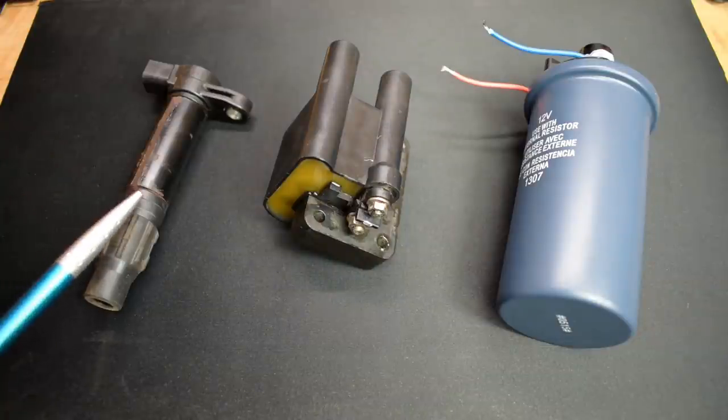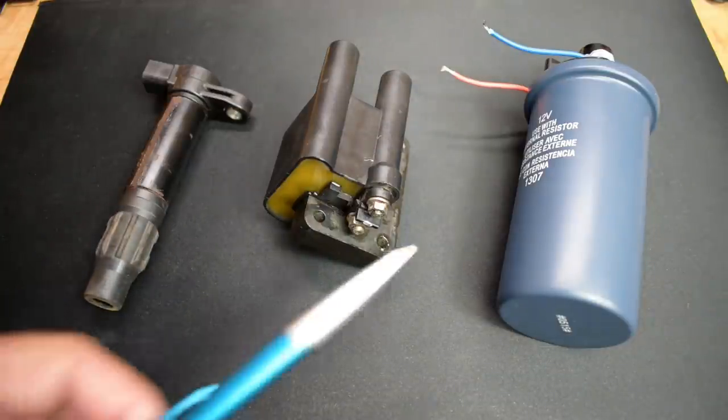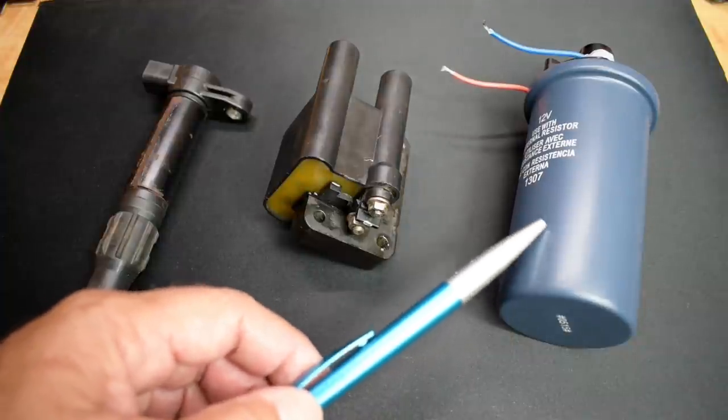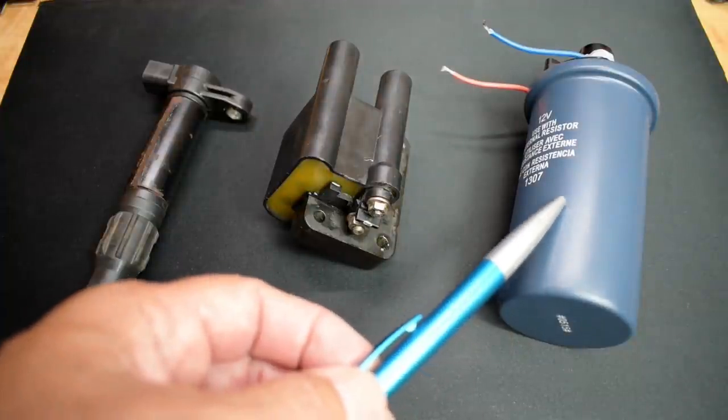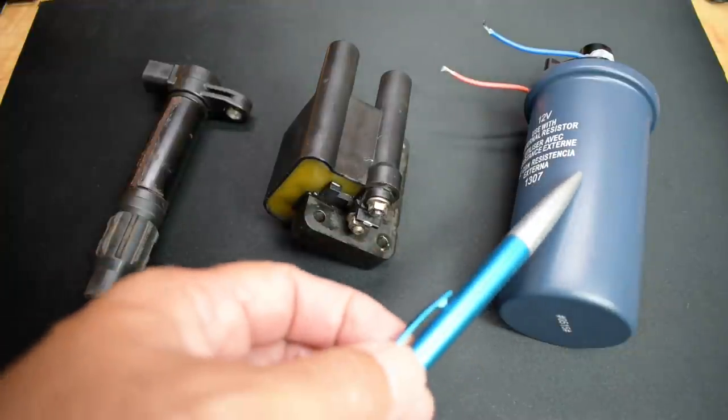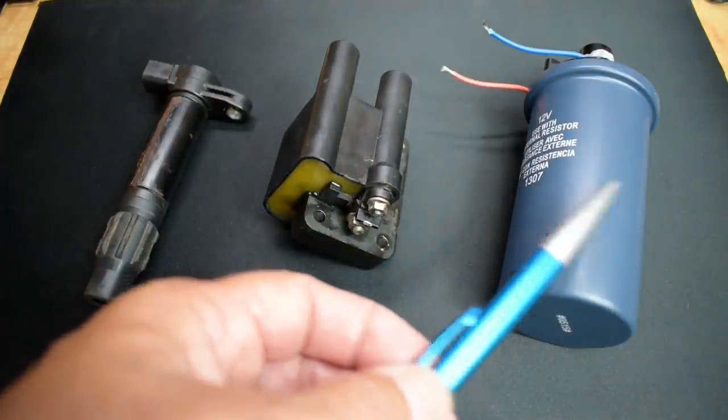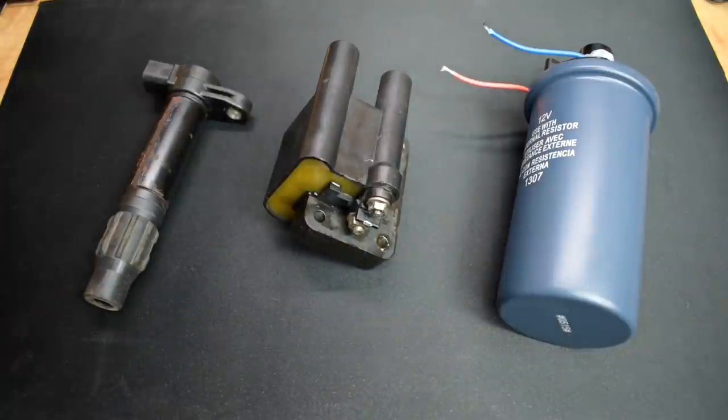The two coils on the left are filled with epoxy around the windings, and this one over here is oil filled. The purpose of the oil is to keep those copper windings cool. The cooler you keep the windings, the longer the life of the ignition coil.